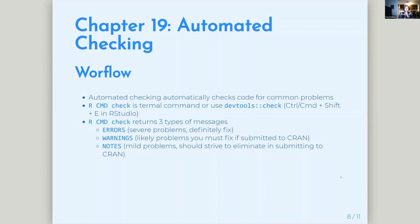Workflow for automated checking — R CMD check basically checks your code for common problems. The terminal command is R CMD check. In devtools, you can run devtools::check() or just Control/Command+Shift+E in RStudio. It returns three types of messages: errors for severe problems you really need to fix, warnings for problems you should probably fix and that must be fixed for CRAN submission, and notes for mild problems. If you're submitting to CRAN, it's really recommended not to have any notes unless you have a really good reason.